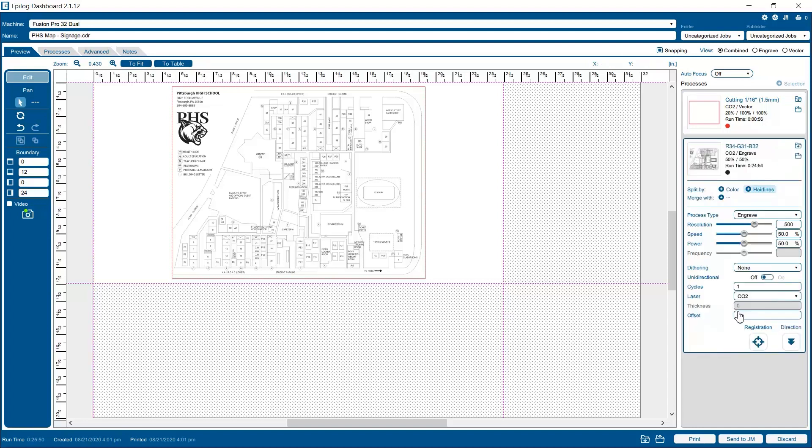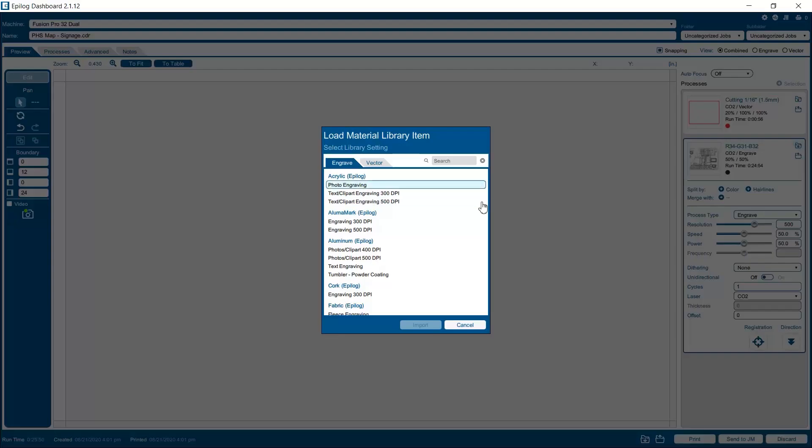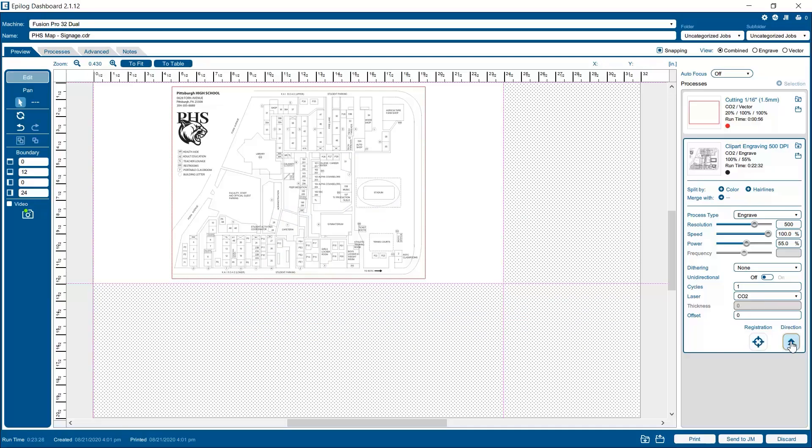For the engraving process, we'll import the acrylic 500 DPI text clipart engraving settings. We'll switch to bottom-up engraving to keep our engraving as clean as possible and we'll set our dithering pattern to Stuki to give us smooth engraving results.